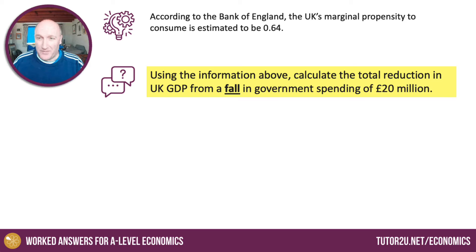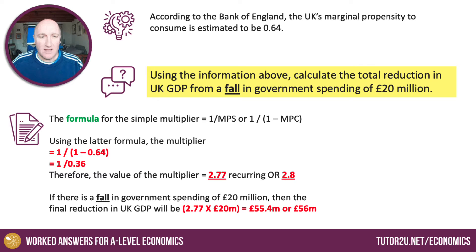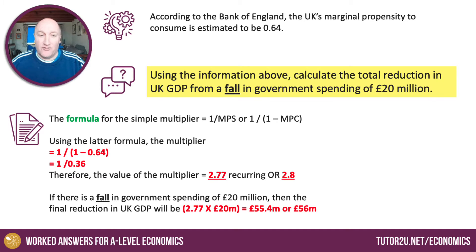So, MPC = 0.64 — we'll be using that. I've highlighted there in bold: fall in government spending. So it needs to be a decrease in G and the impact on GDP. We're going to be using the multiplier here. The simple multiplier only has one leakage, which is the propensity to save. You need to put the formula in: the formula for the simple national income multiplier is 1 divided by the marginal propensity to save.